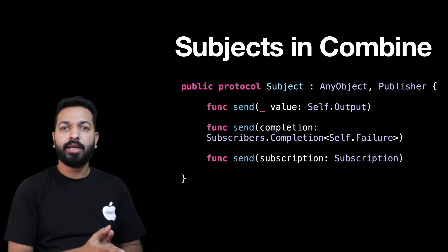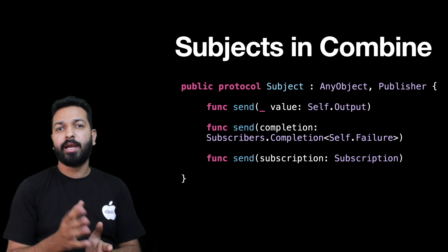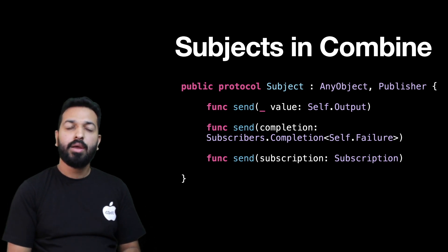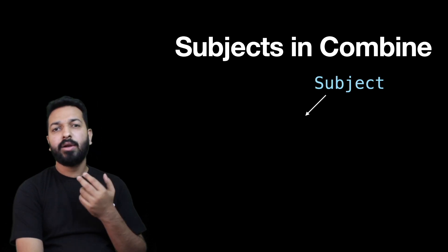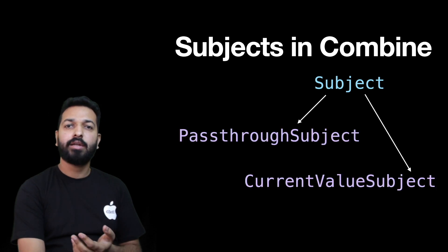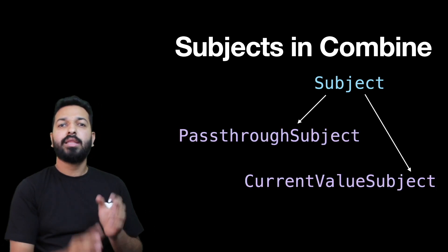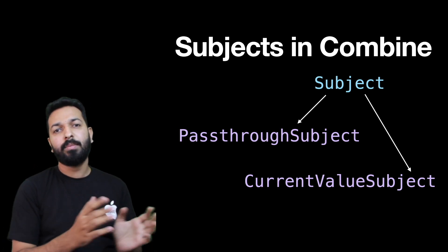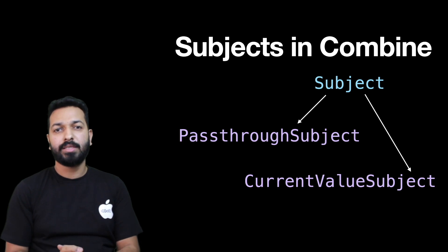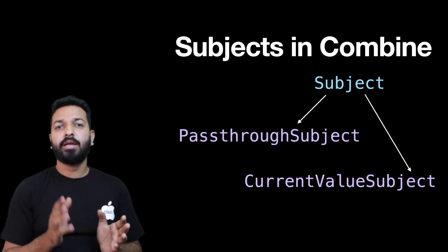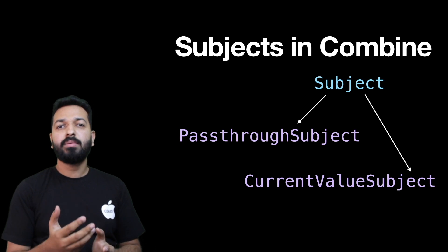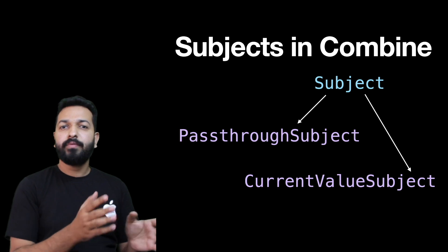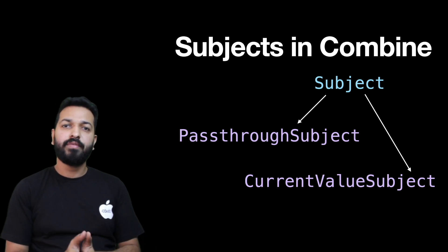Using this abstract type you can create your own subjects by writing a concrete implementation, but in the majority of cases you won't need to because subject already has two concrete implementations: PassthroughSubject and CurrentValueSubject. These two are the concrete implementations of the subject protocol and can be used in different places as per different requirements. Let's see the difference between them, since both conform to the subject protocol and have all the methods of publisher.